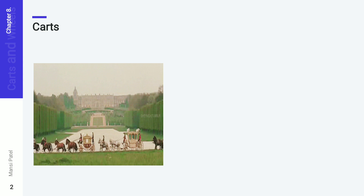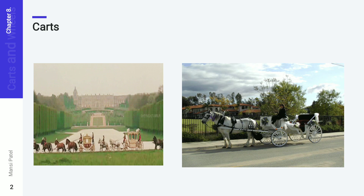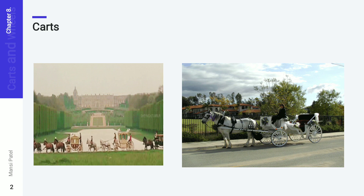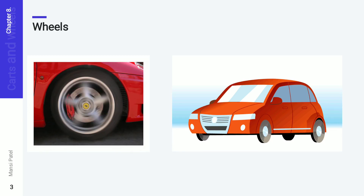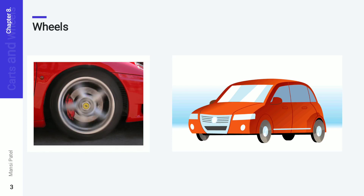Do you know what a cart is? Here I am showing two images of carts, and you can see there is a wheel as well. The shape of the wheel is a circle — it is round. Now look around you at the wheels. Here I am giving two examples of wheels. You can see wheels on different vehicles like bicycles, cars, trucks, bikes, and motorcycles.